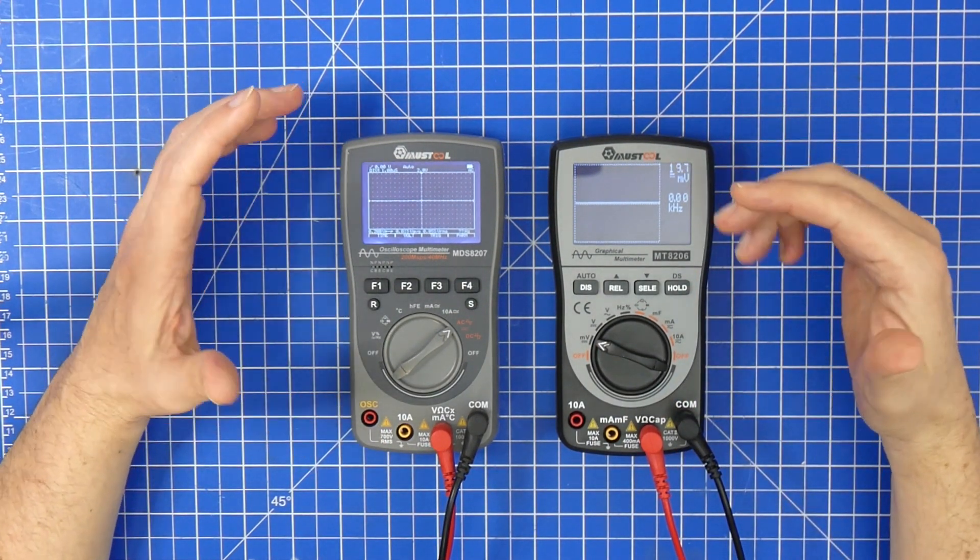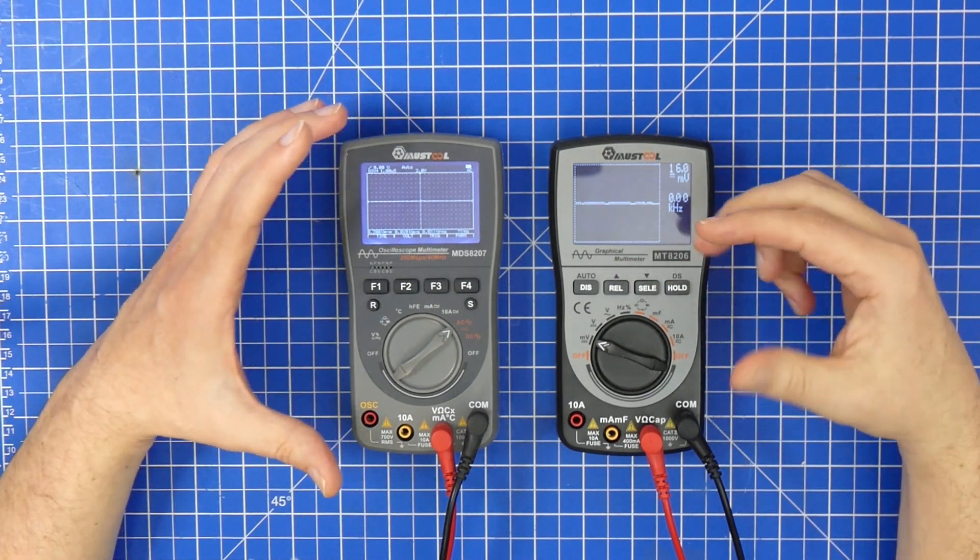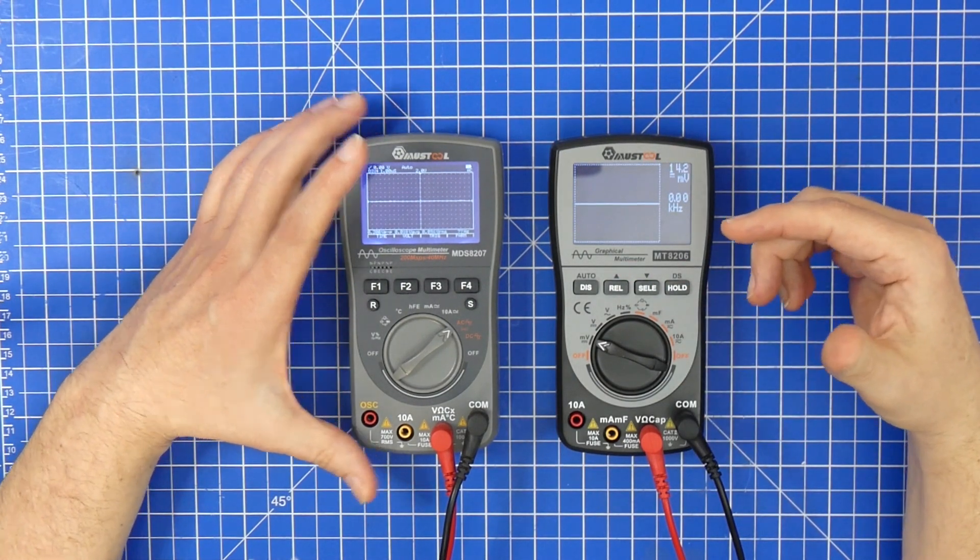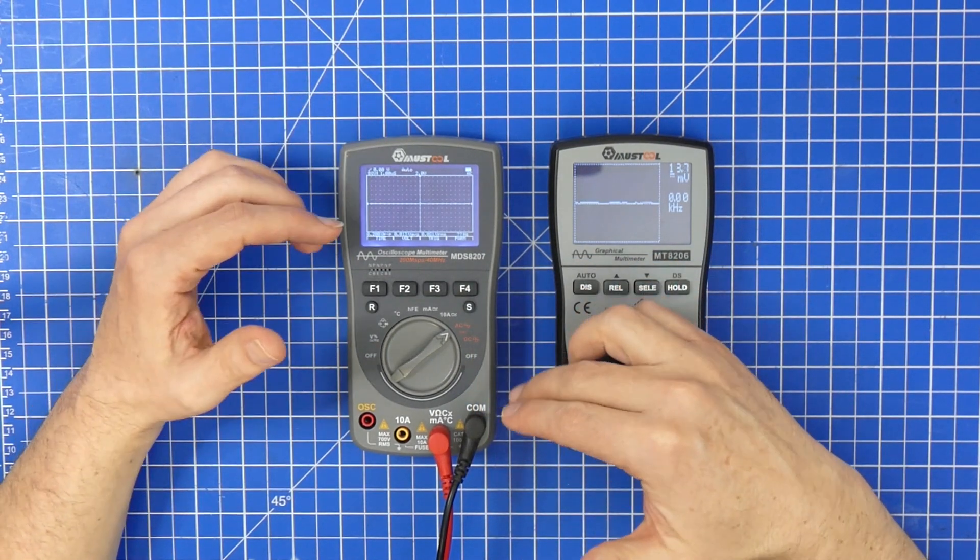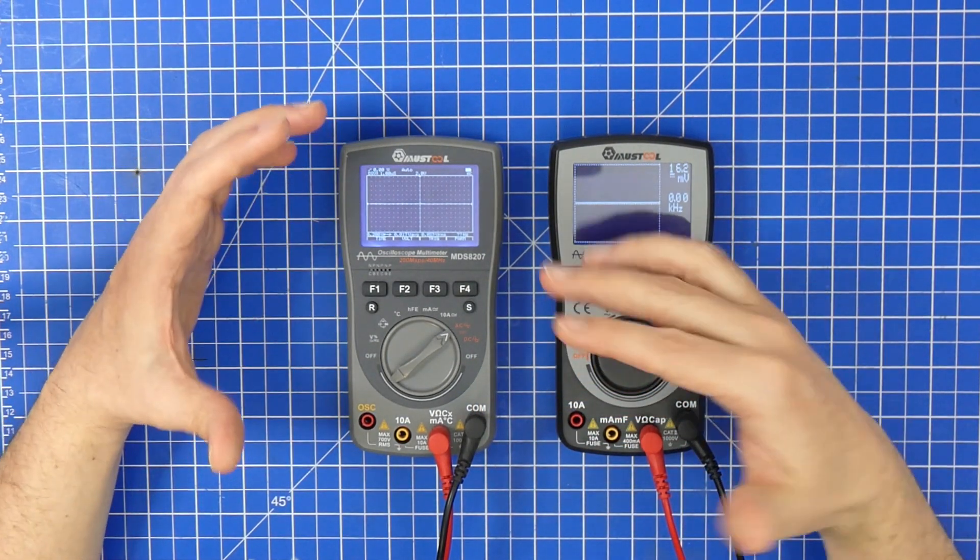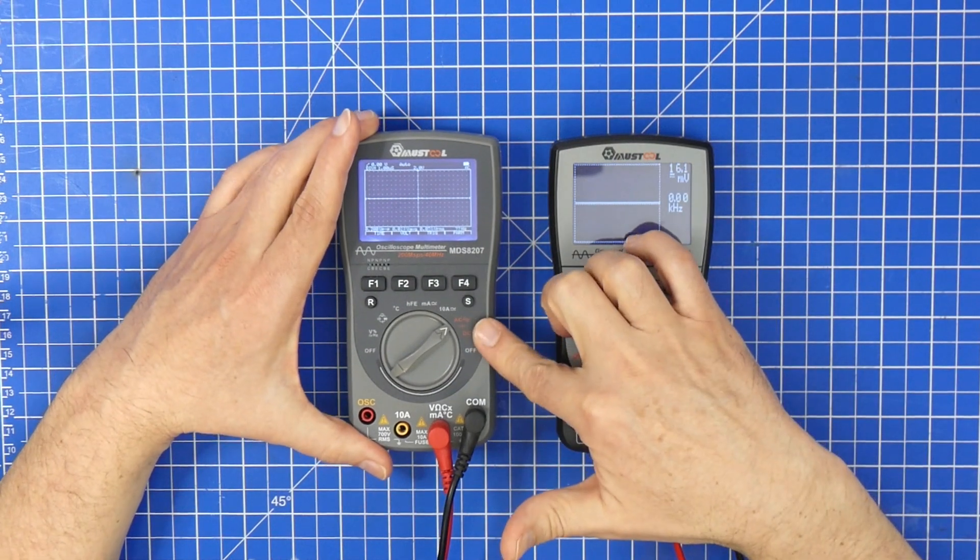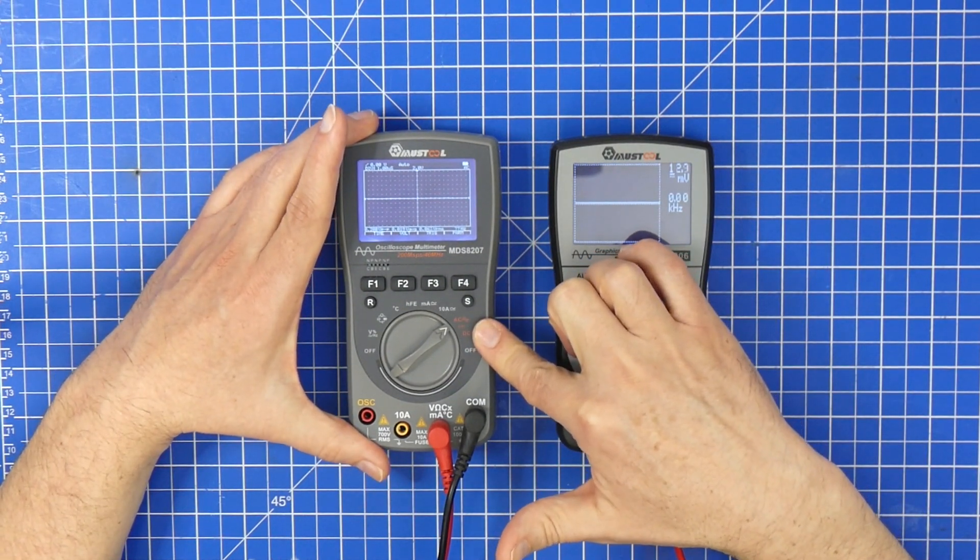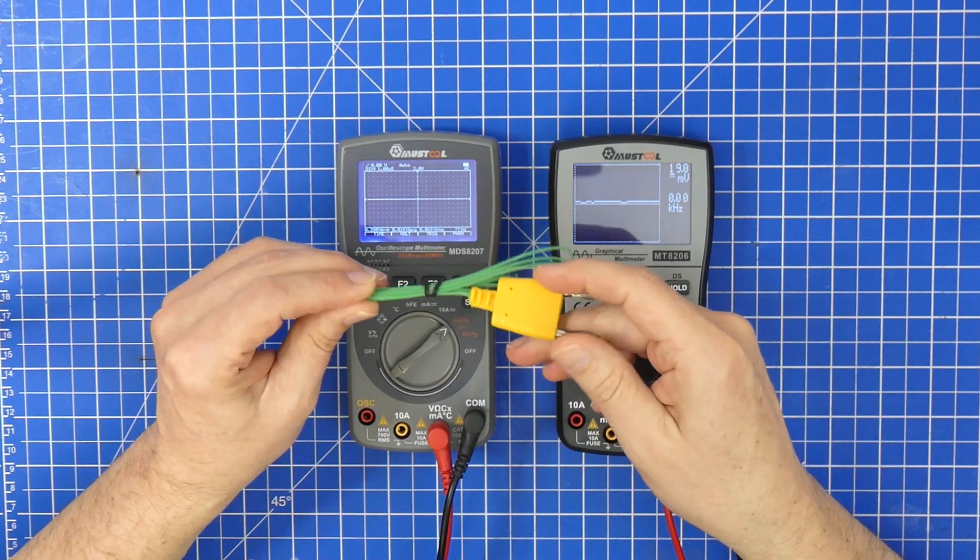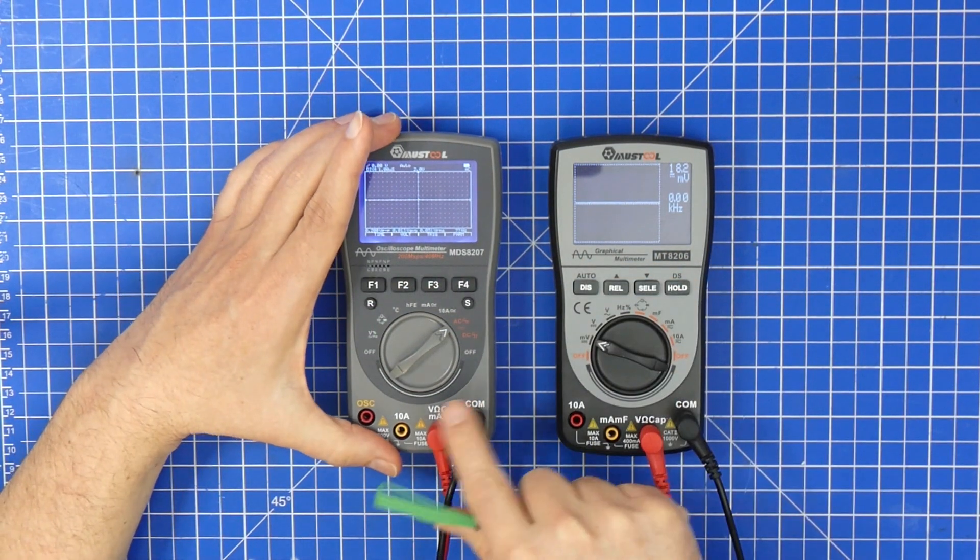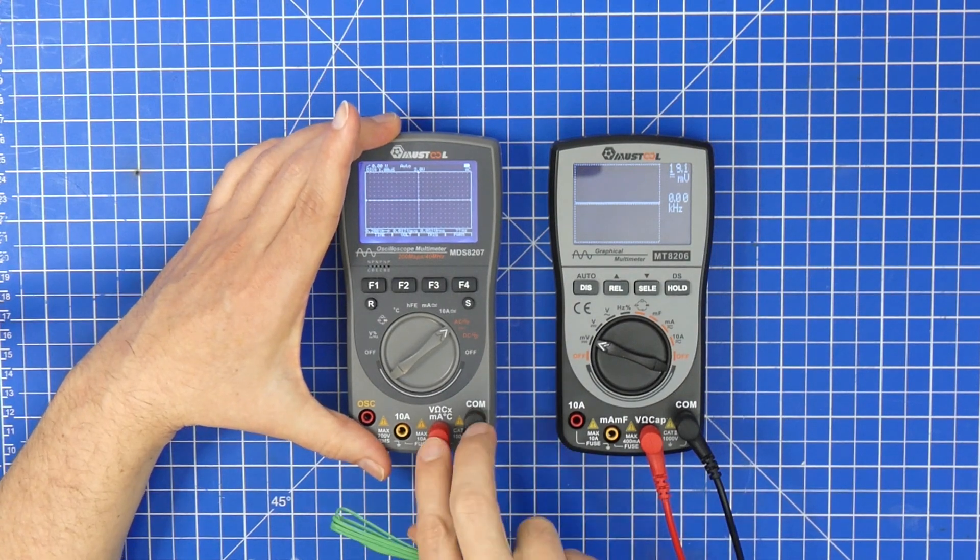There are different modes to capture data on this. This thing here can save data in the internal storage and you can retrieve it. What they also did is this thing now has a temperature sensor mode and it even comes with its own K-type probe which you can just put into the voltage plug and it's going to give you very exact temperatures up to 250 degrees Celsius.